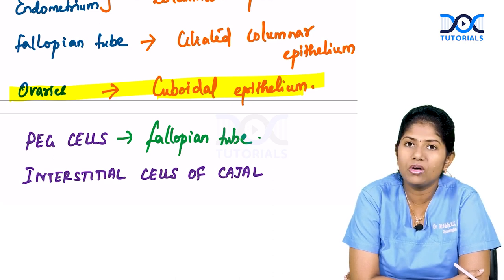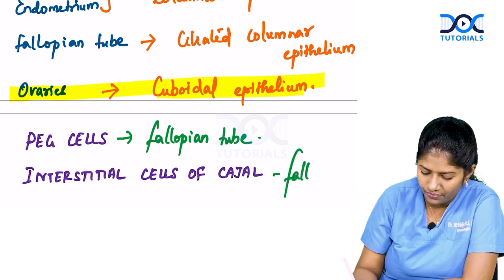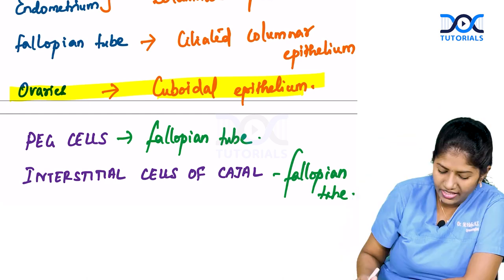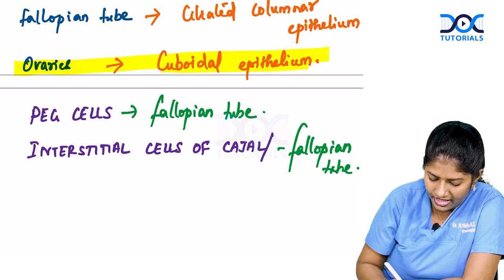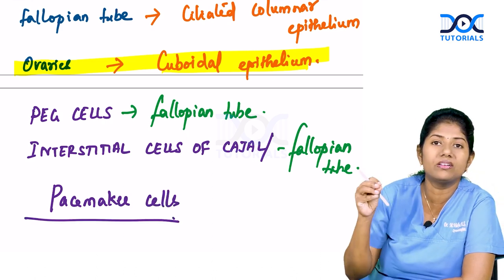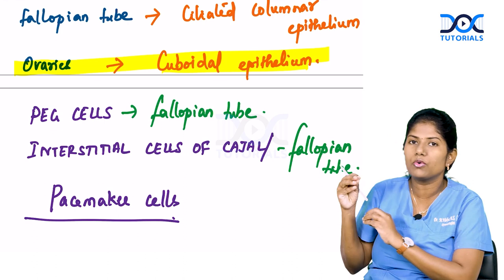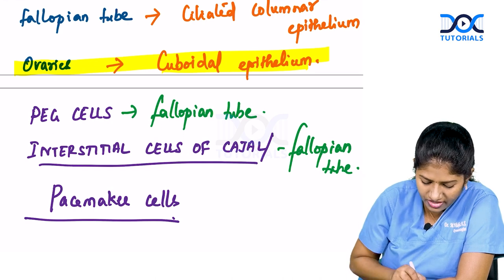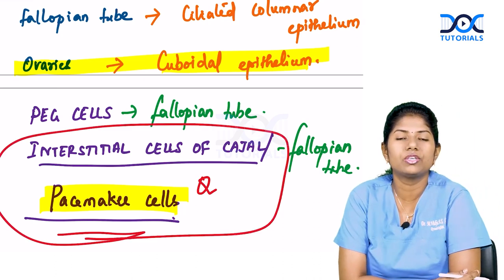Interstitial cells of Cajal are also seen in the fallopian tube. These cells are otherwise called pacemaker cells. Their main function is to initiate the contraction of the fallopian tube, and these contractions move the fertilized egg to the endometrium. This is a very important MCQ — you can expect it in the upcoming exam.